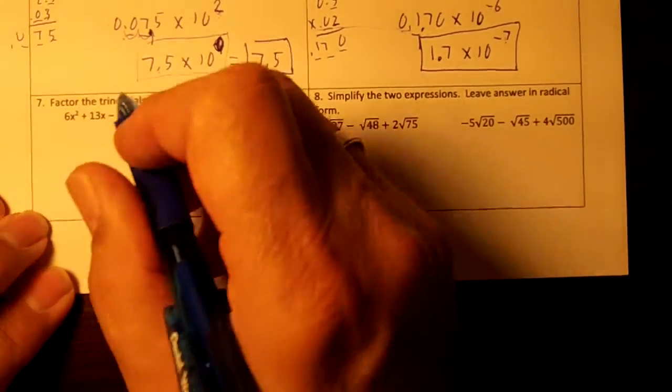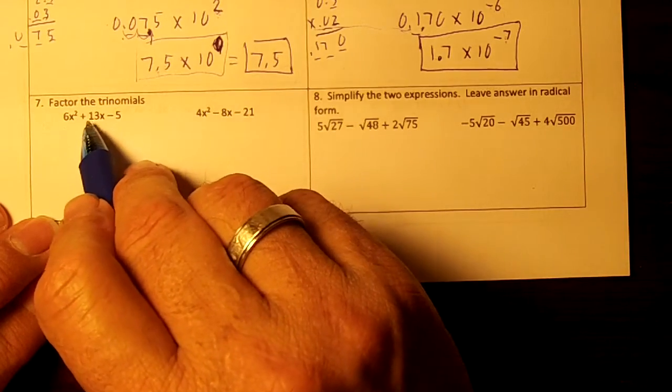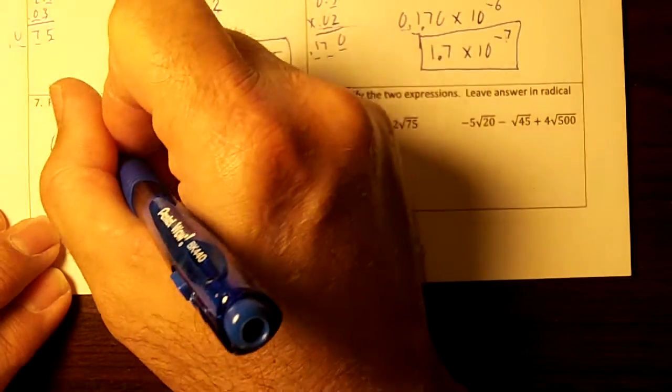Number 7. Factor the trinomials. Make sure you take out the common terms. You can't take out a common term on this because 13 is prime. Okay, so I'm going to draw my two parentheses.